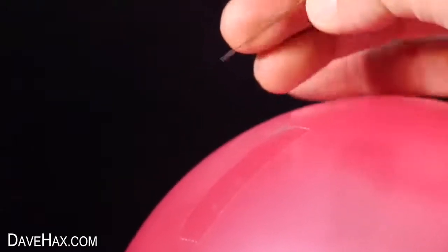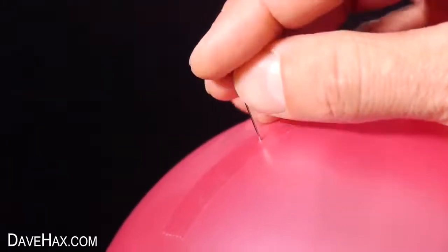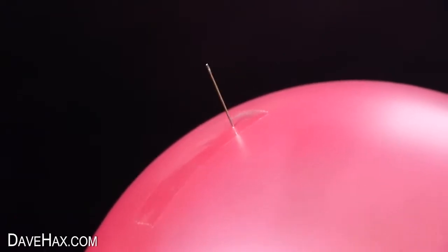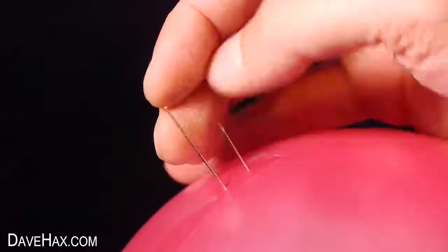You just need to take a needle and push it straight through the middle of the tape into the balloon, and it doesn't pop. Pretty cool, huh? You can actually do more than one needle and it won't pop the balloon.